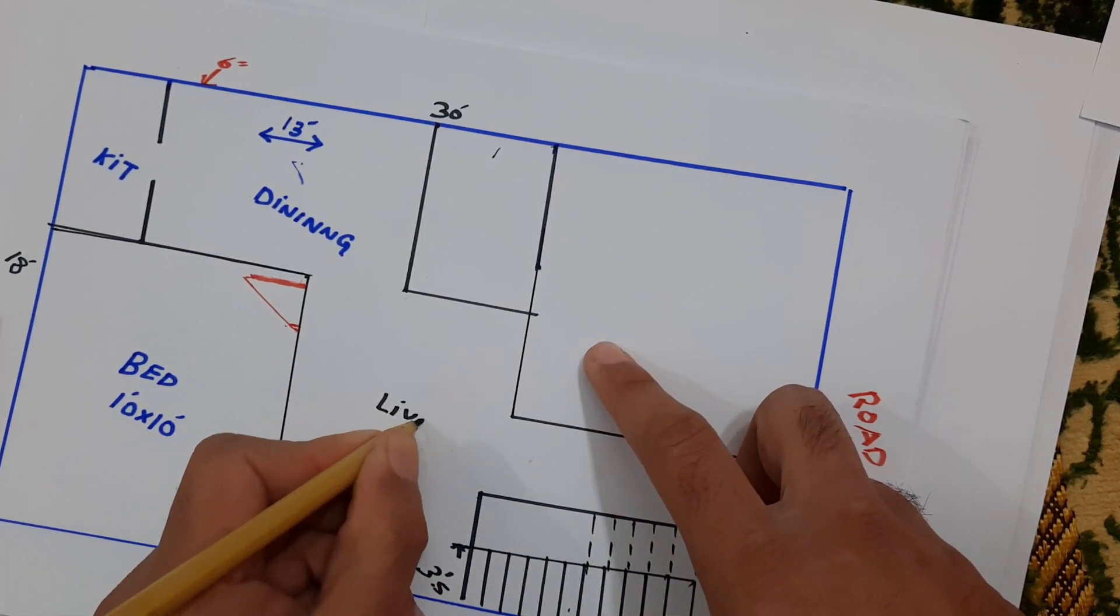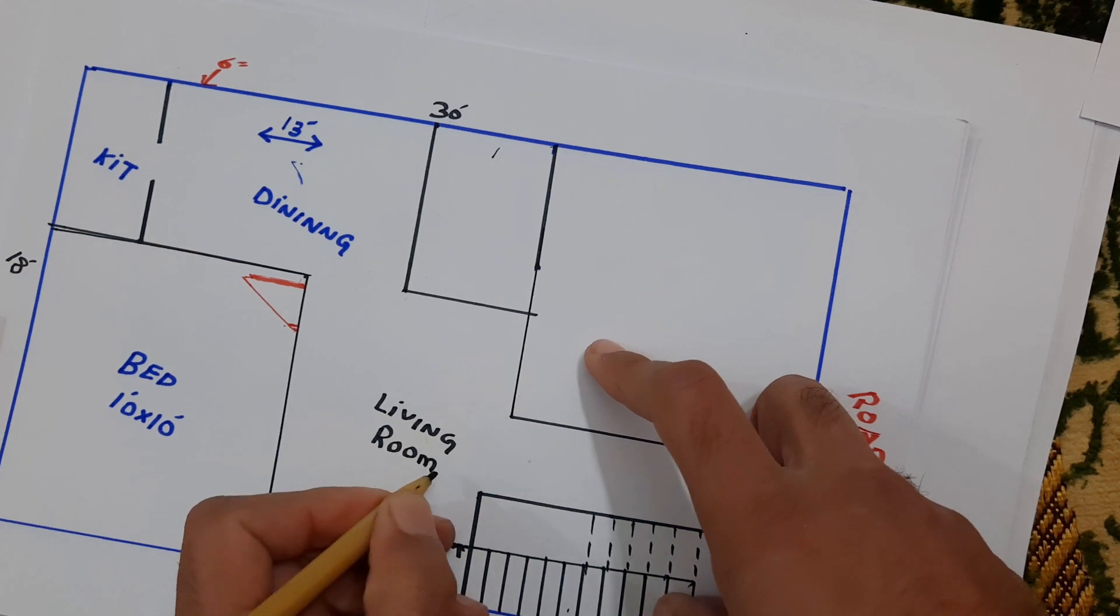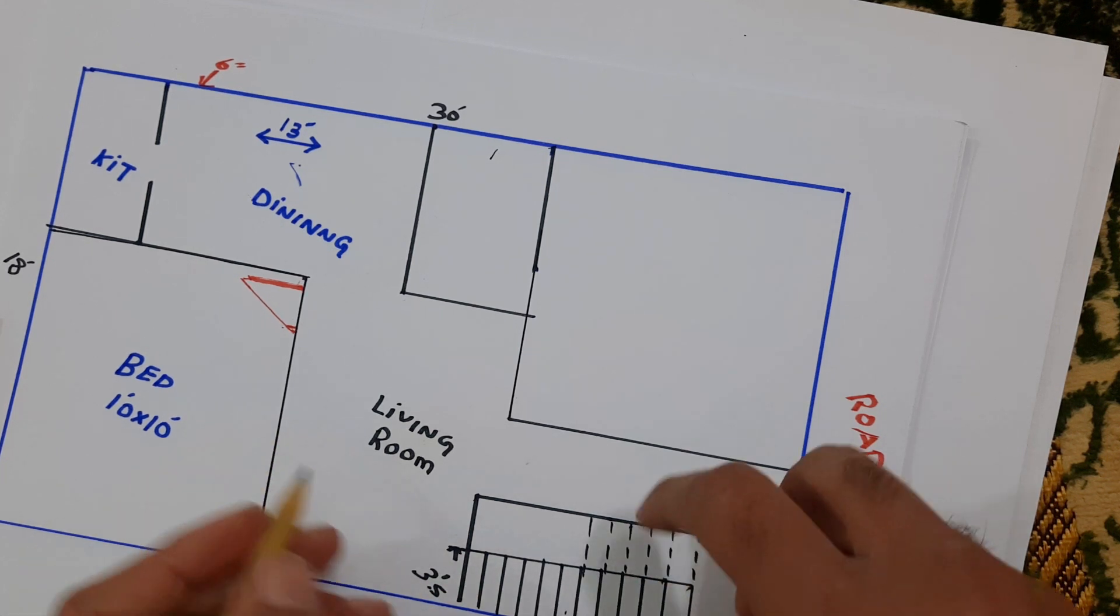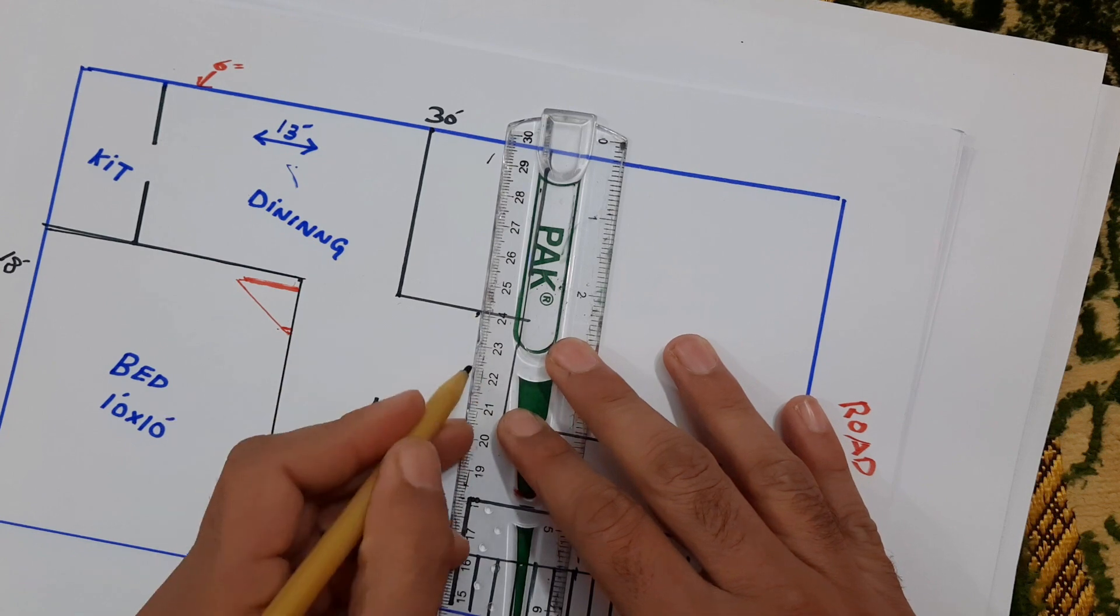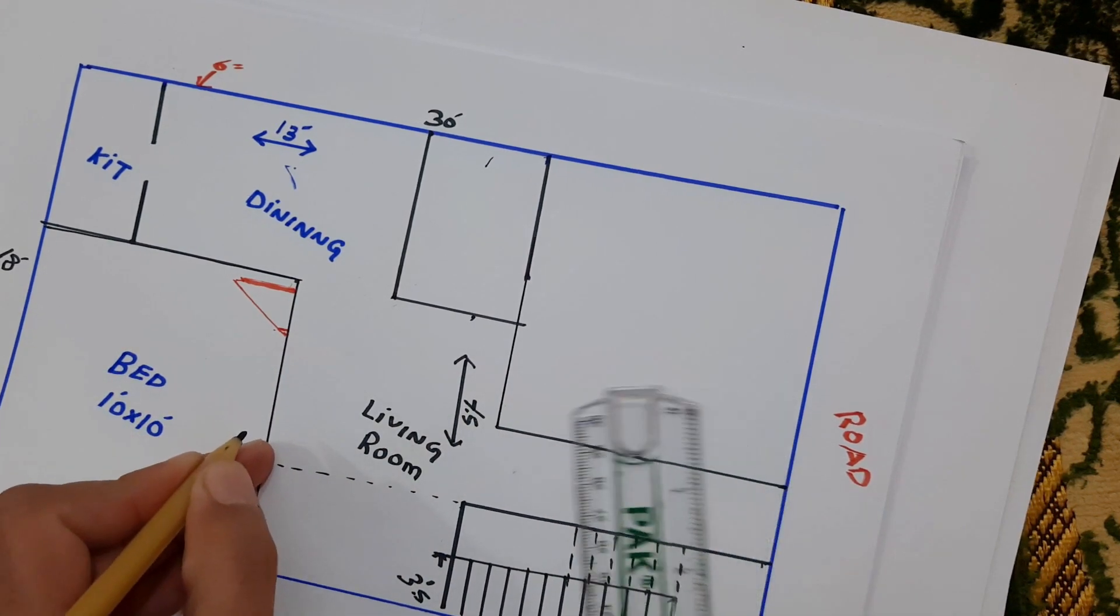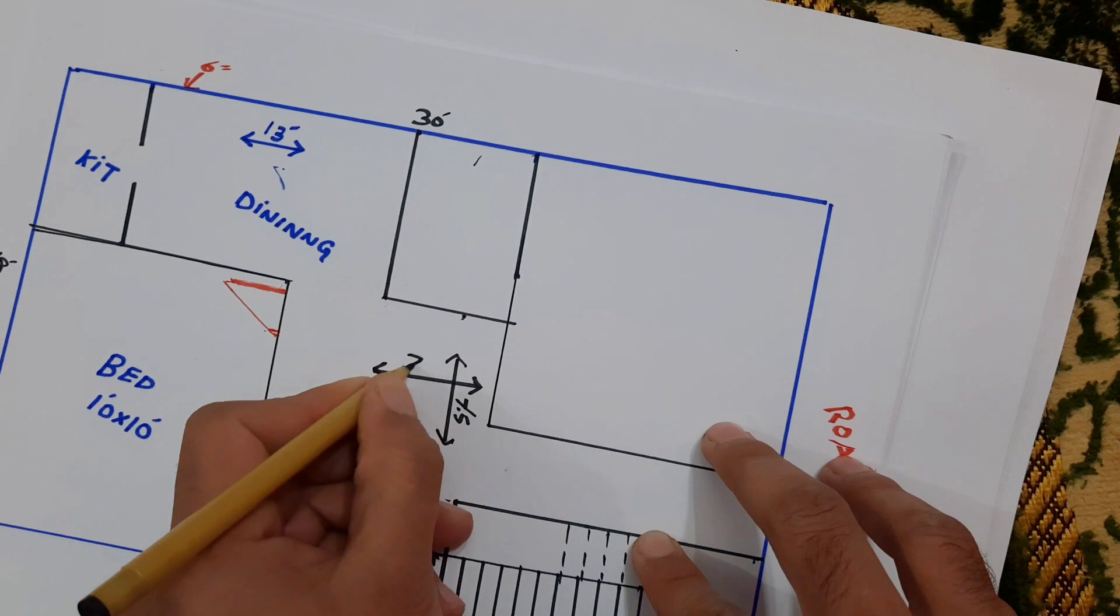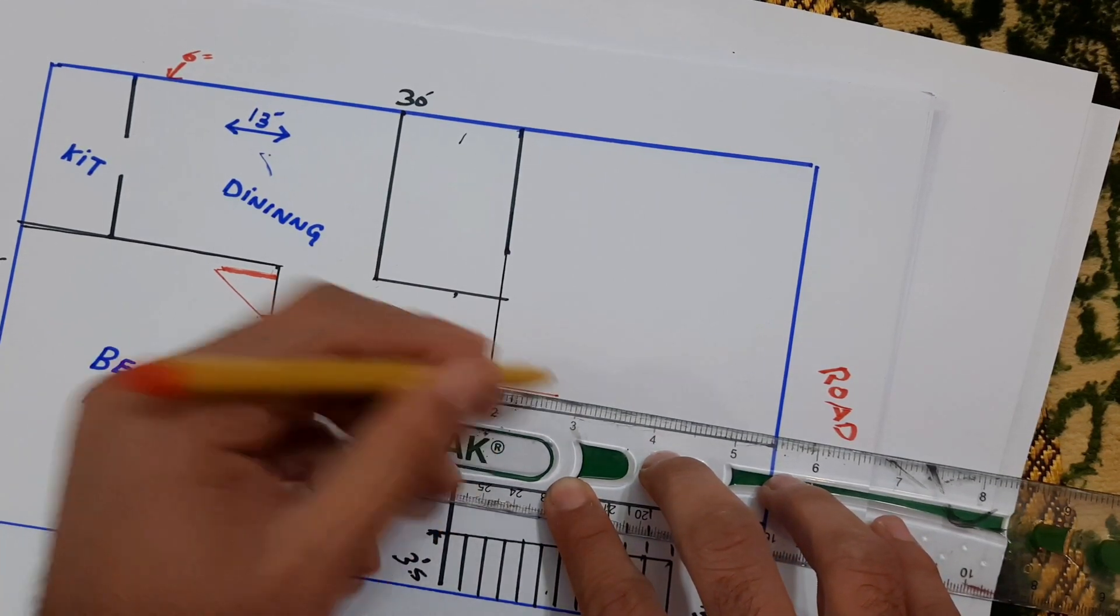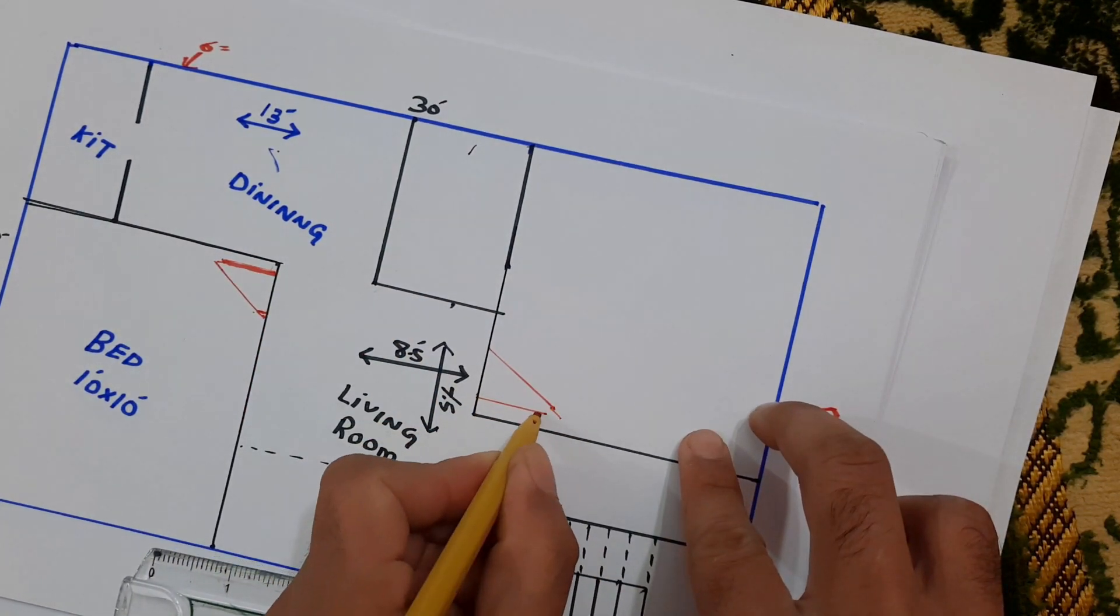Okay, size of this living room is 8.5 by 7.5 feet from here - 8.5 by 7.5. This is 7.5 feet and here this is 8.5 feet. Here guys, this is for this bedroom, this is the door.